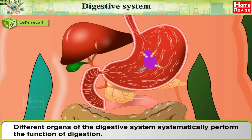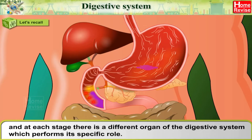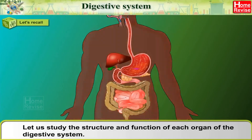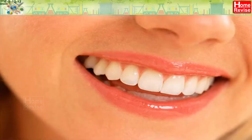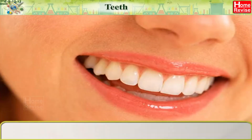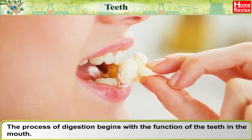Different organs of the digestive system systematically perform the function of digestion. There are different stages in the process of digestion of food, and at each stage a different organ of the digestive system performs its specific role. Let us study the structure and function of each organ of the digestive system.